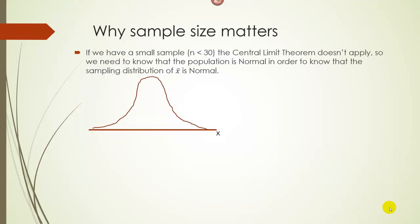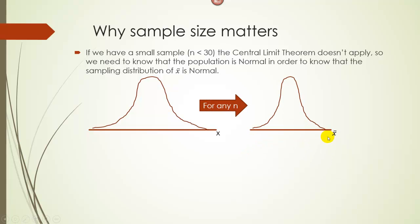To draw this out with a picture: if we start off with a normal distribution — this is our population of X values, like individual people — then no matter what the sample size is, our sampling distribution of X-bars will also be normal. The larger the sample size, the more normal the distribution becomes, but if it's starting out normal, it's going to end up normal.